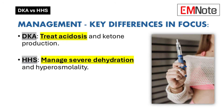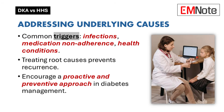Potassium management depends on the patient's initial levels. If it's low, hold insulin and give potassium supplements. If normal, add potassium to the IV fluids. If high, hold off on potassium and monitor closely. Even while managing the acute crisis, we can't lose sight of the bigger picture — DKA and HHS are usually triggered by something else, like infections, medication problems, or other health conditions. Finding the root cause is essential detective work.